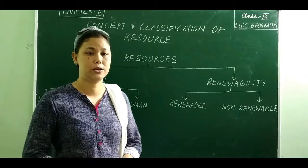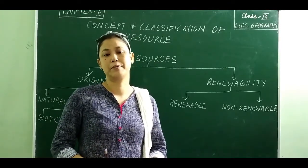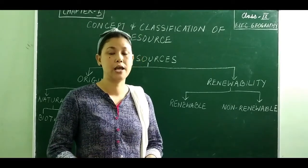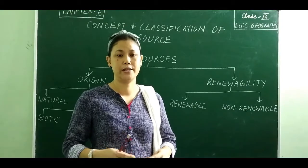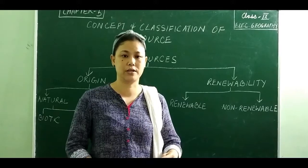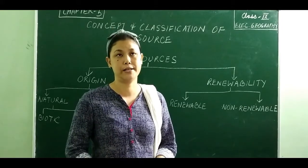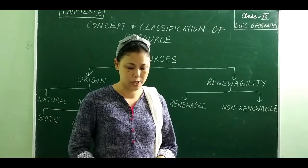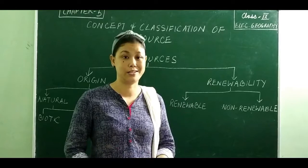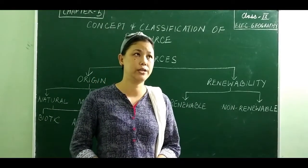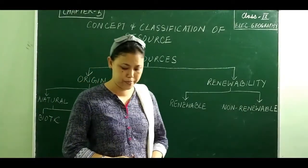The third kind is human resource. We human beings, and you as students, are in the process of developing skills and attaining education so that you can be of use to society. When we develop those skills and achieve the level of education that helps us contribute to society's progress and development, we become human resources. This ability of human beings to satisfy needs as well as the demands of others is termed human resource. These are the three types based on origin: natural, man-made, and human.